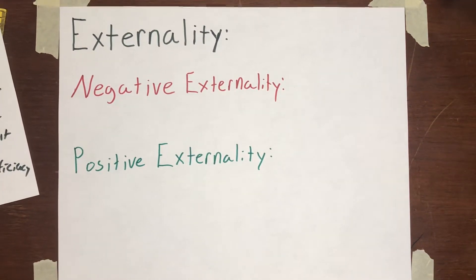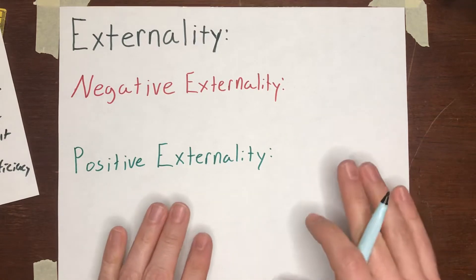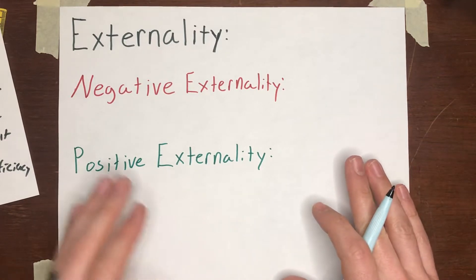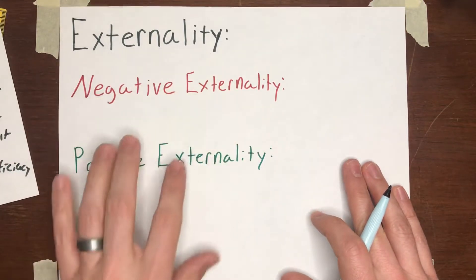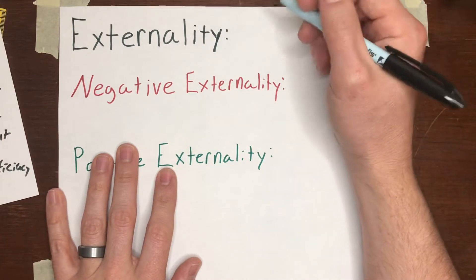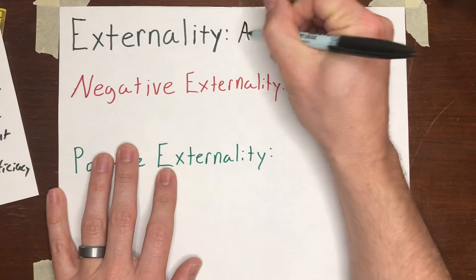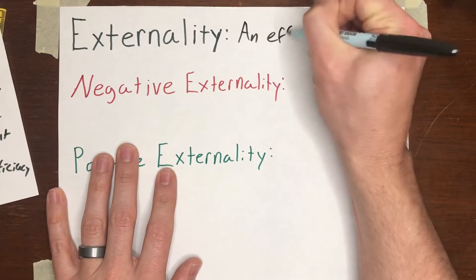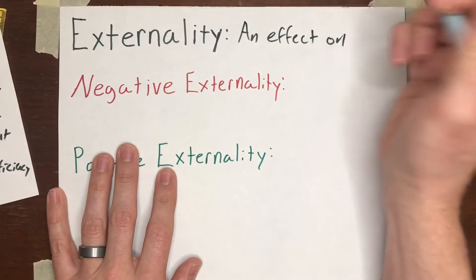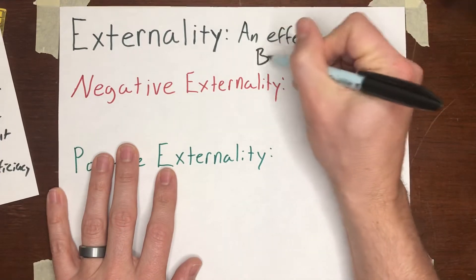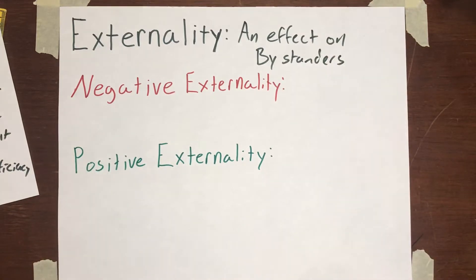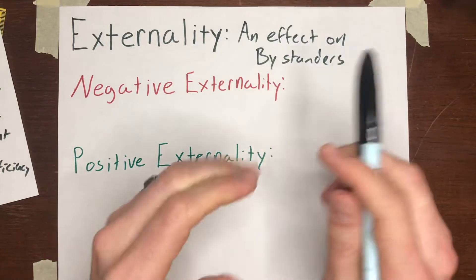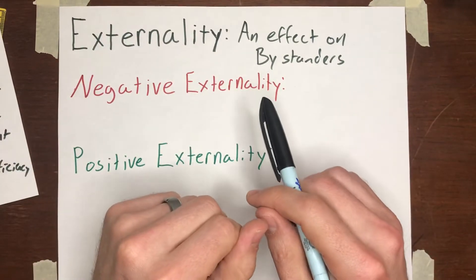Econ 200. This is the first video I'm going to post about chapter 10 on externalities, and in this video I'm going to make it pretty quick. I just want to talk about a few definitions. When an economist talks about an externality, what that means is we're talking about something that has an effect on bystanders — anybody who's not directly involved in the purchase or production of the good in question.